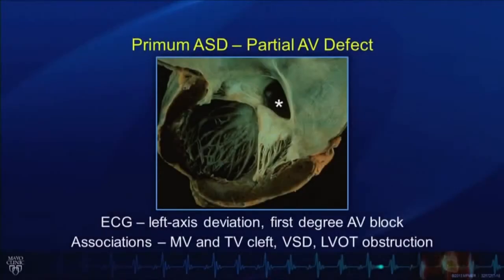Today we're going to talk about a systematic approach to the echo assessment of adults with congenital heart disease. Turning our attention now to the next most common atrial septal defect — the primum atrial septal defect, as demonstrated by this asterisk.